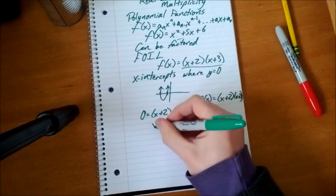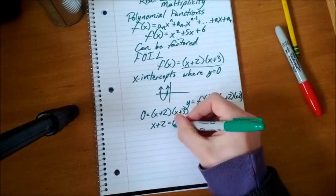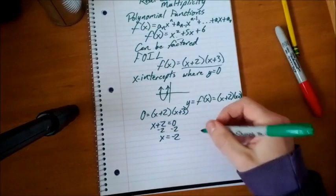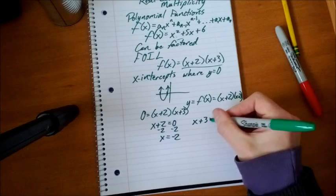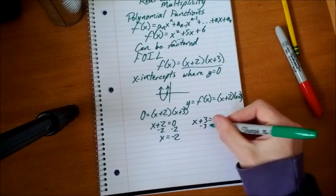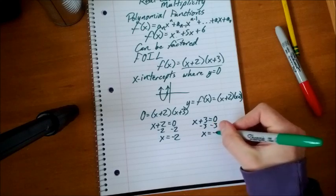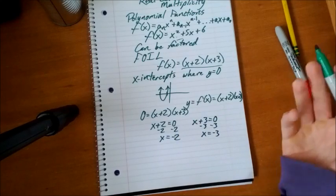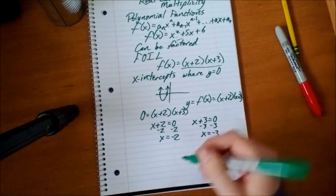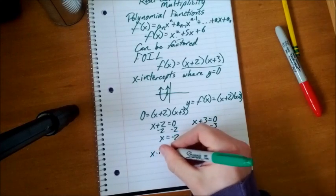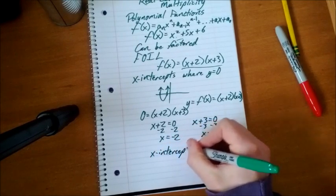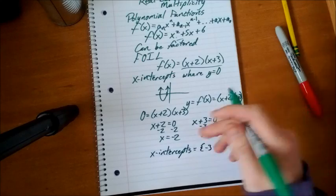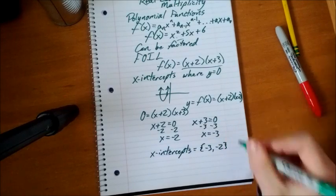Let's do that. We will take each factor and set it to 0. x + 2 = 0, minus 2, x = -2. That's one of our factors. x + 3 = 0, minus 3, x = -3. You could do that just by eyeballing it. What plus 3 equals 0? Negative 3. What plus 2 equals 0? Negative 2. So we have our x-intercepts equal to the set {-3, -2}, where the lower number goes on the left.